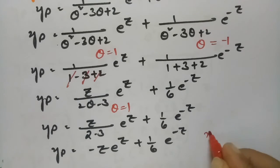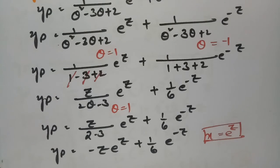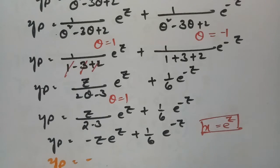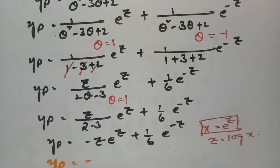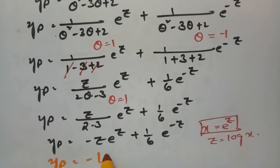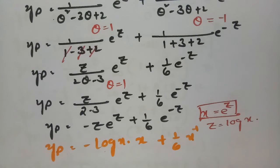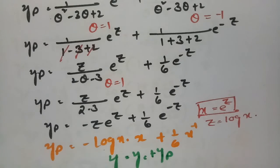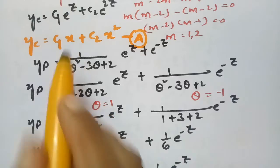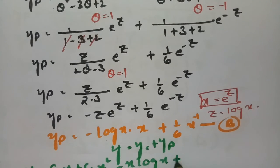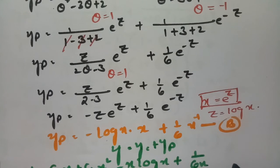Replacing back using z = log x and e^z = x: yp = −(log x)·x + (1/6)·x^(−1) = −x·log x + 1/(6x). The general solution is y = yc + yp: y = c1·x + c2·x² − x·log x + 1/(6x). This is how we solve Cauchy's Euler equations.